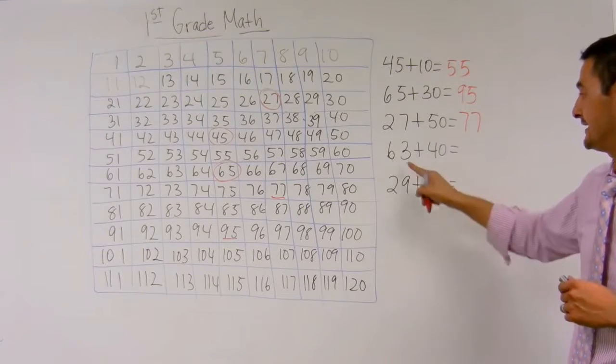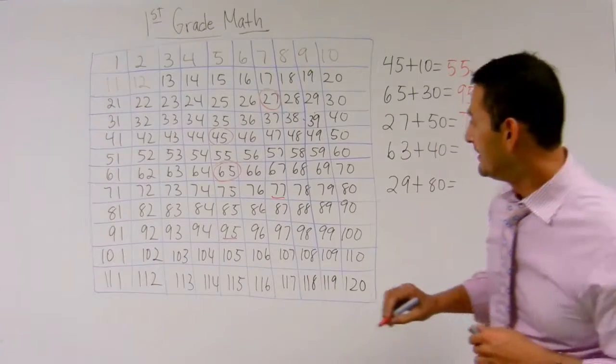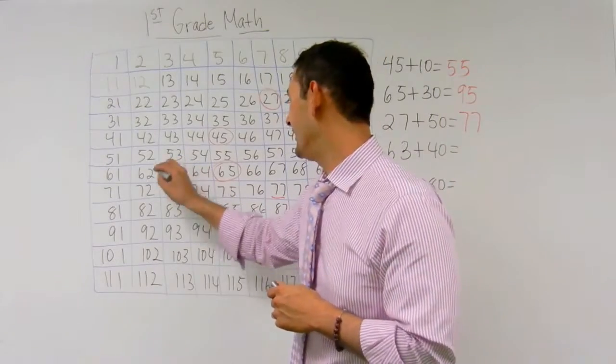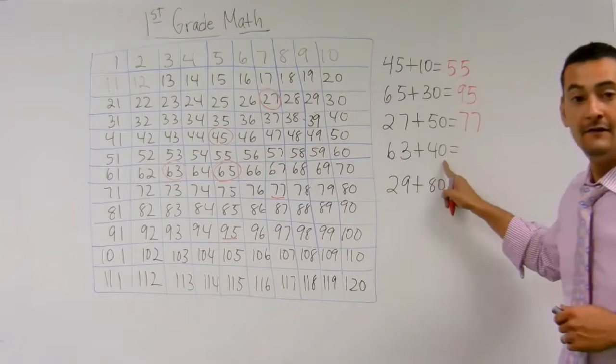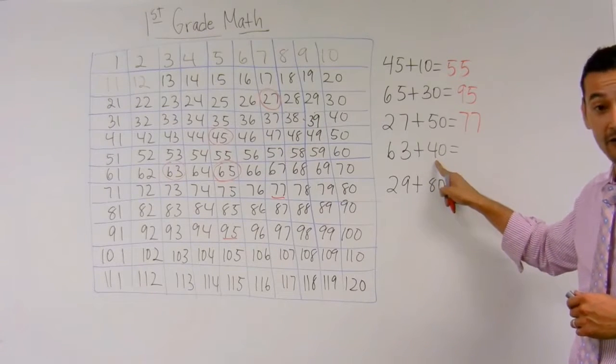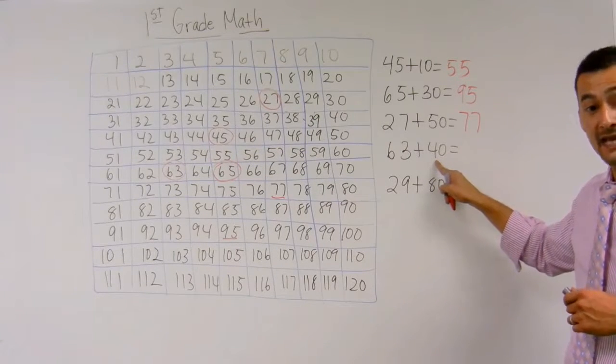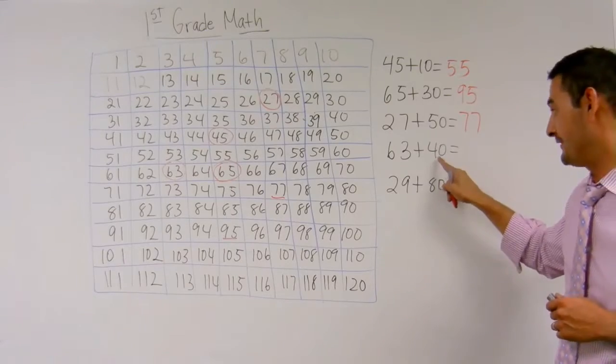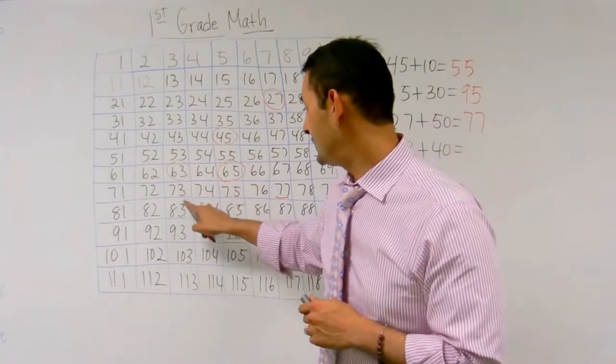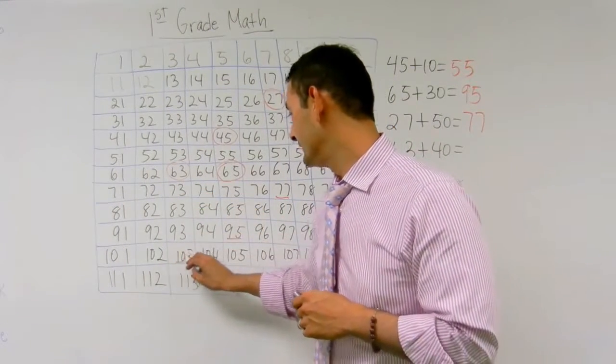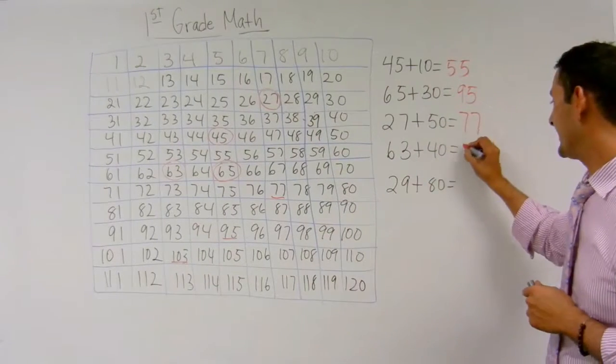Now let's look at 63 plus 40. We're at 63 on this number line. Here you go. And we're going to add 40. So we're going to go down four times: 10, 20, 30, 40. 63 plus 40 is 103.